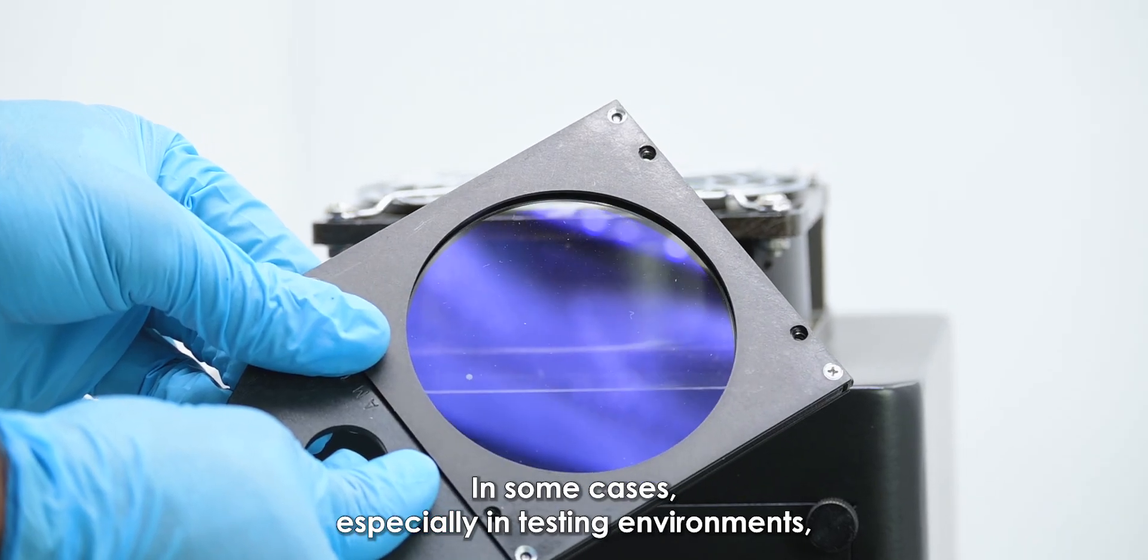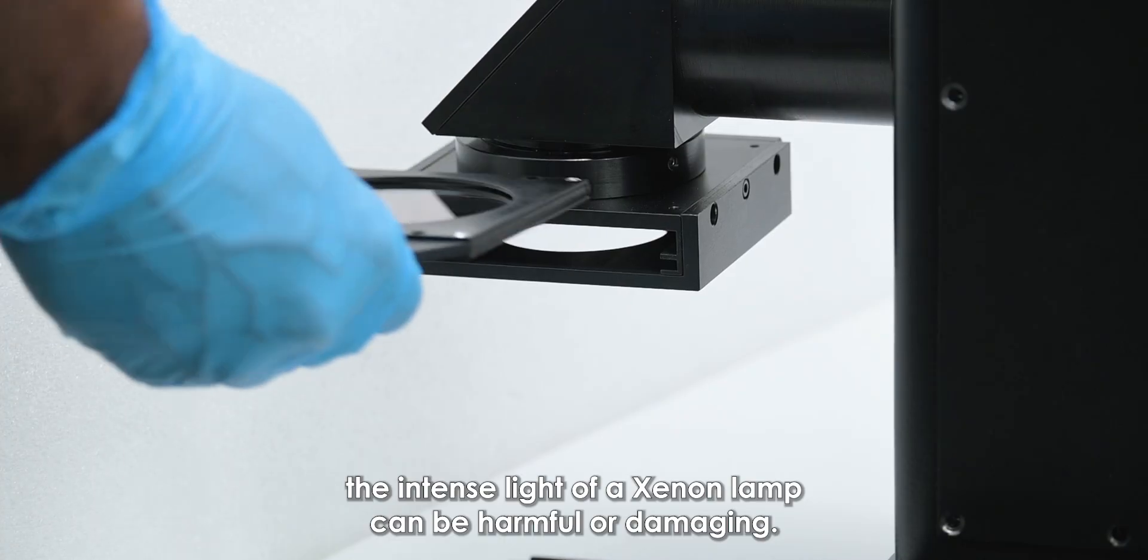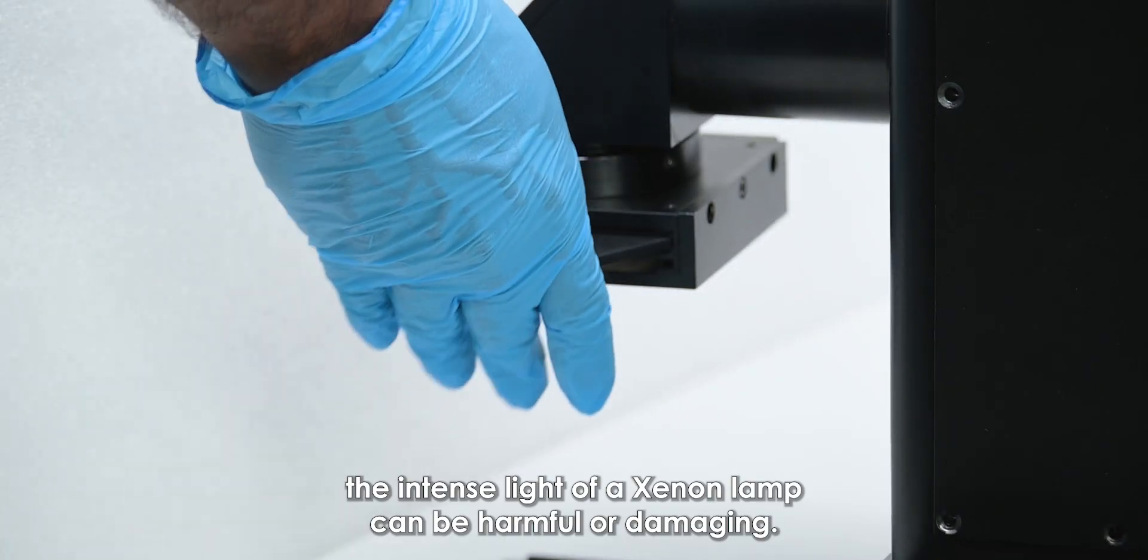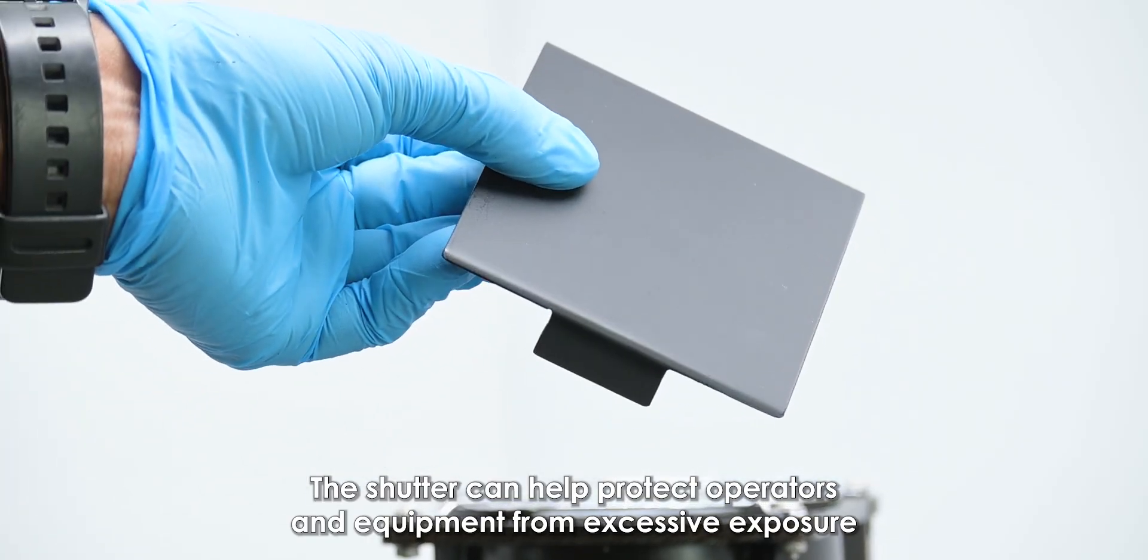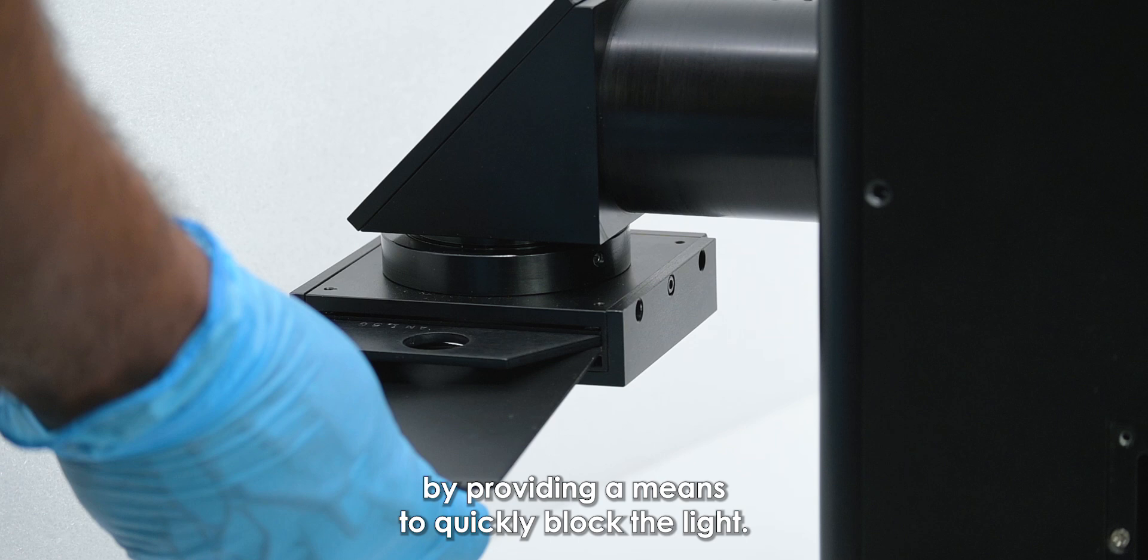In some cases, especially in testing environments, the intense light of a xenon lamp can be harmful or damaging. The shutter can help protect operators and equipment from excessive exposure by providing a means to quickly block the light.